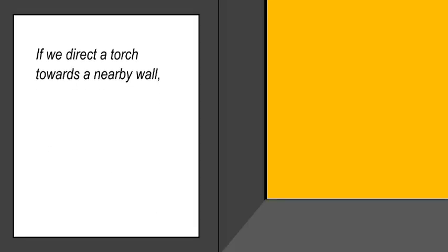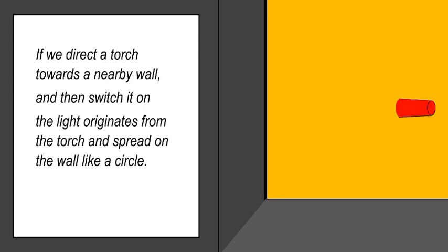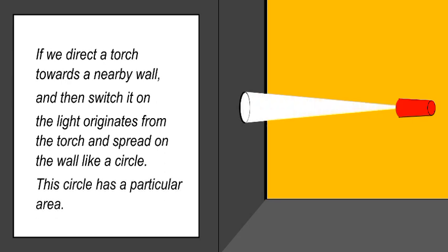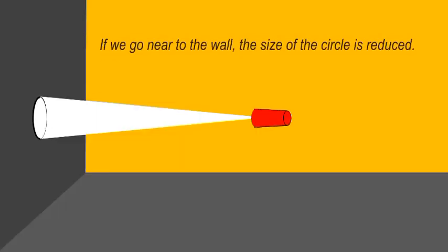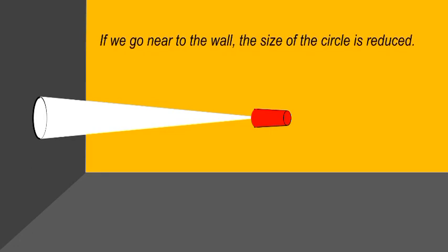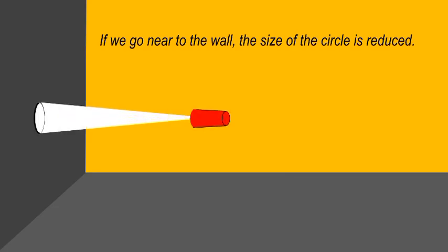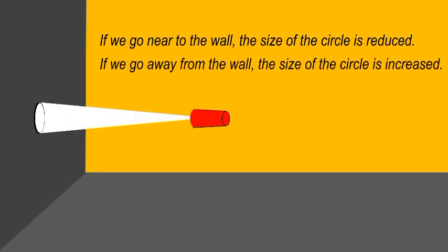If we direct a torch towards a nearby wall and then switch it on, the light originates from the torch and spreads on the wall like a circle. This circle has a particular area. If we go near to the wall, the size of the circle is reduced. And if we go away from the wall, the size of the circle is increased.